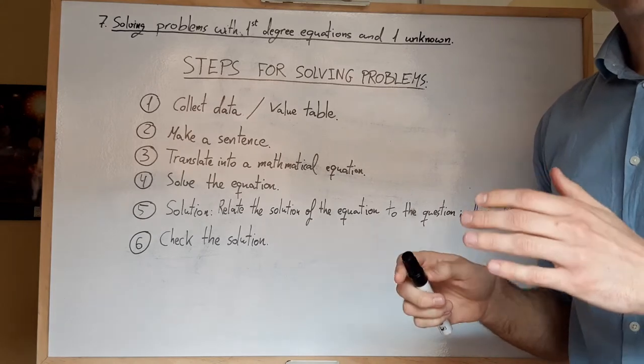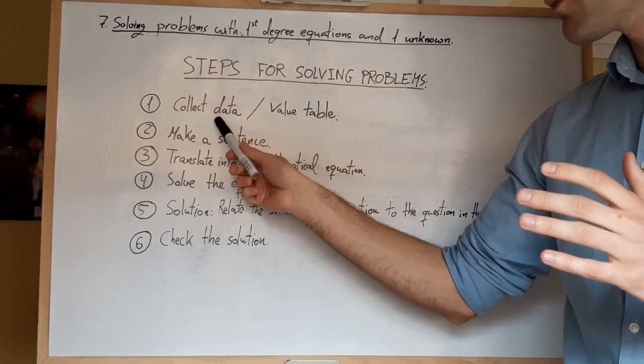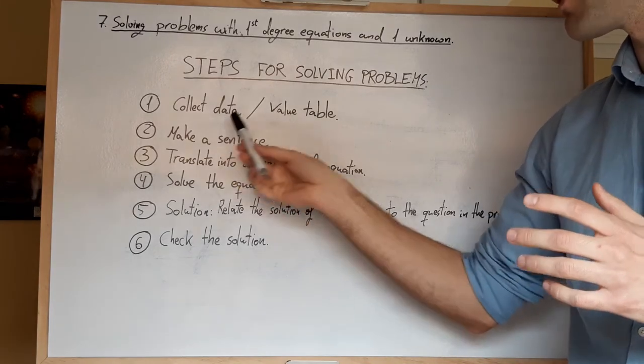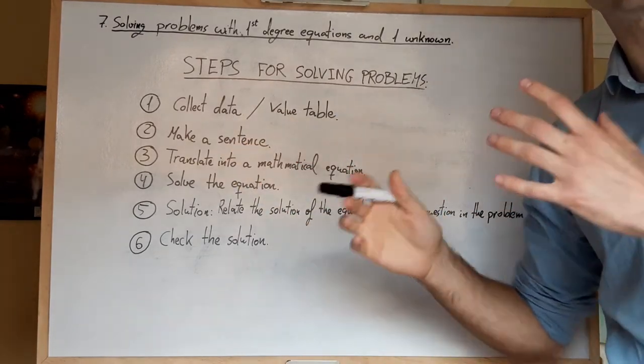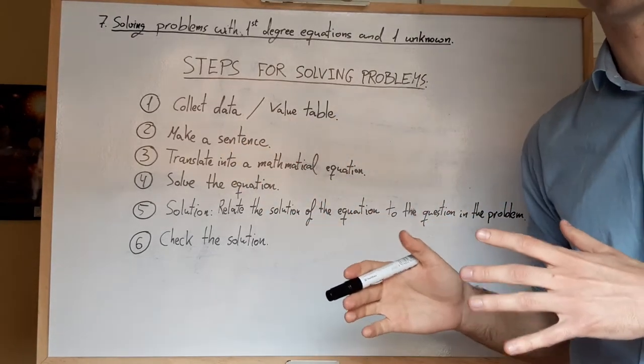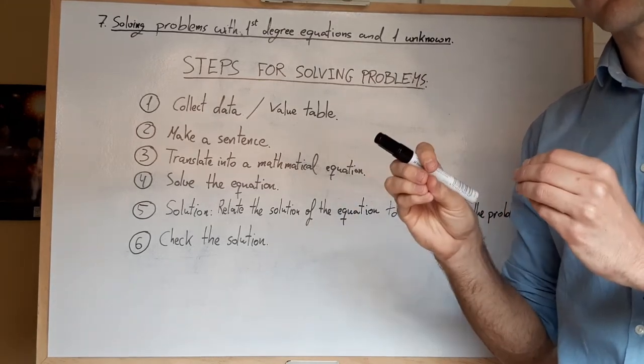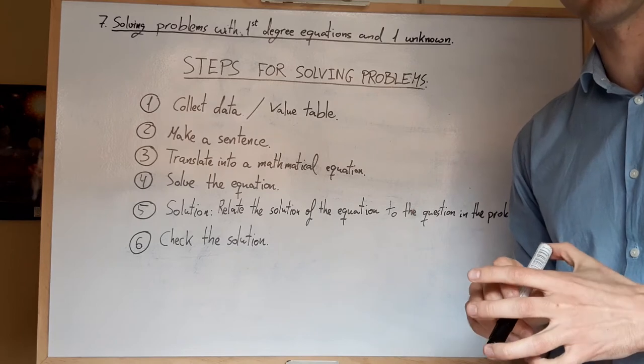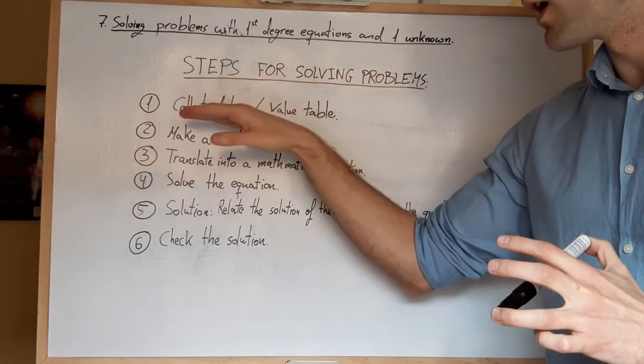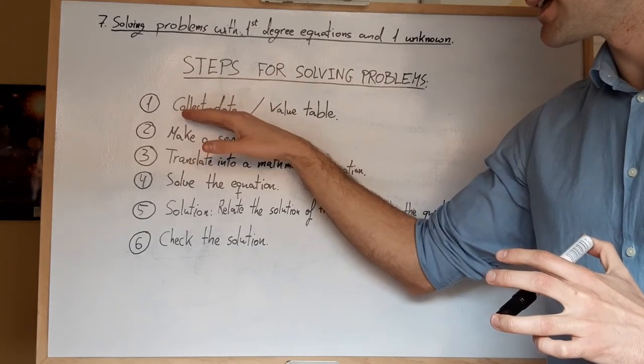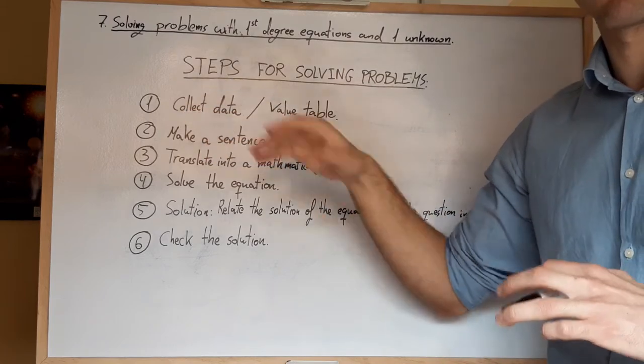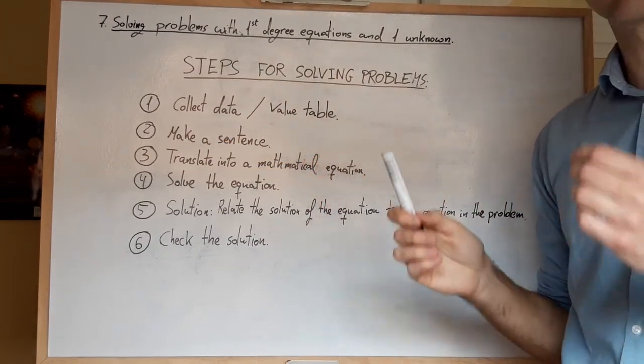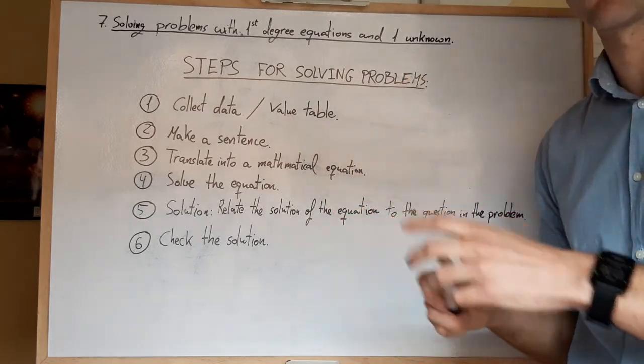In the first step, what we have to do is collect data or, in some particular problems, those data are going to be taken in the form of tables. Not in all of them is it necessary to use tables, but there are some particular models of problems, I will tell you which specifically, in which instead of gathering data in any way, it is very important to specify them in form of tables, because this is going to help us solve the problem.